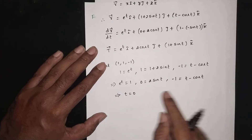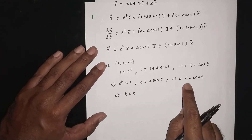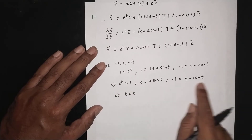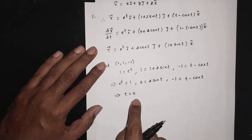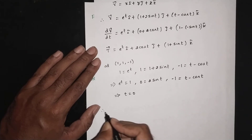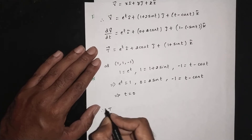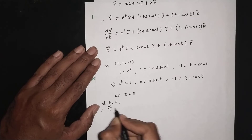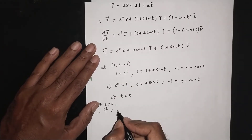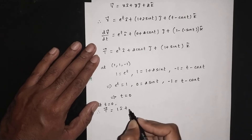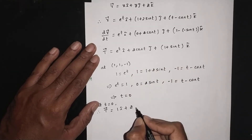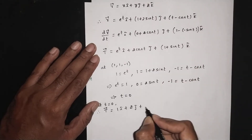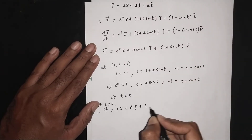At t = 0: e^(4·0) = 1 ✓; 1 + 2sin(0) = 1 + 0 = 1 ✓; t - cos(t) = 0 - 1 = -1 ✓. All three equations are satisfied. Therefore t = 0 is within the interval [-1, 2]. At t = 0, the tangent vector dr/dt = e^(4·0)·4i + 2cos(0)j + (1 + sin(0))k = 1·i + 2j + 1k.